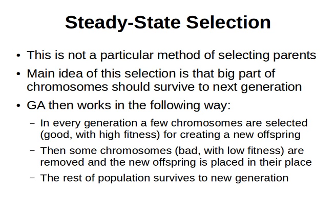Welcome back. The steady-state method — it's not particularly a method for selecting parents, but the idea is that a big part of the chromosomes should survive to the next generation. Basically, we want a subset of the chromosomes, and hopefully the good chromosomes, to survive to the next generation.